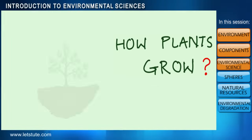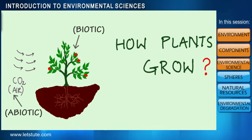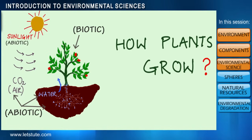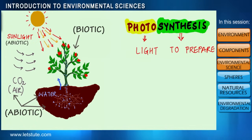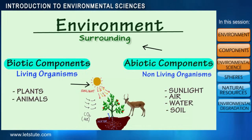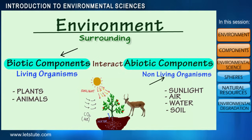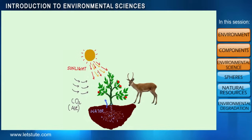To understand it further, let us look at how plants grow. As we all know, plants take in carbon dioxide from the air, water from the soil, and sunlight to make their food through a chemical process known as photosynthesis. These plants also serve as food for higher animals. So we can say all biotic components constantly interact and exchange things with each other as well as with abiotic components for their survival.